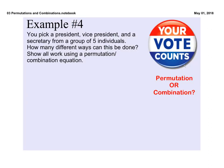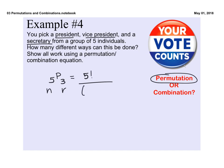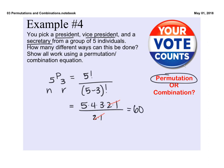You pick a president, a vice president, and a secretary — there's definitely a hierarchy there. So we're talking about permutation because order matters, choosing three people from a group of five: 5P3. N factorial is 5 factorial on top, and N minus R factorial is 5 minus 3, which is 2 factorial, so 2 times 1 on the bottom. Canceling out, we get 5 times 4 times 3, so 60 different outcomes.